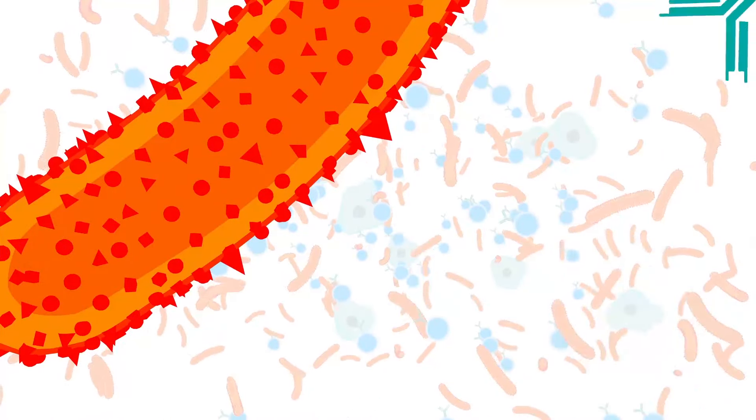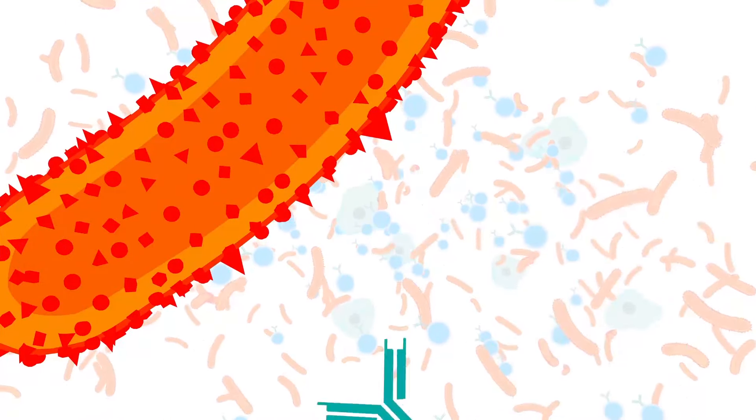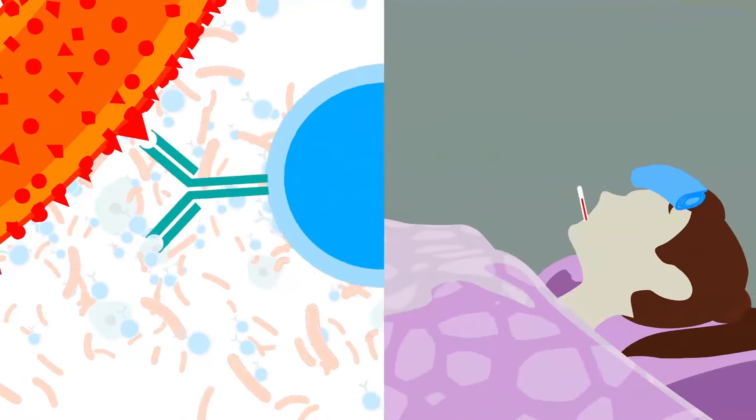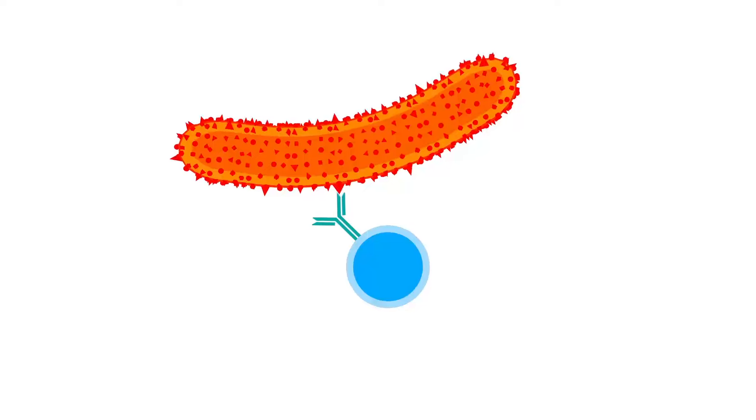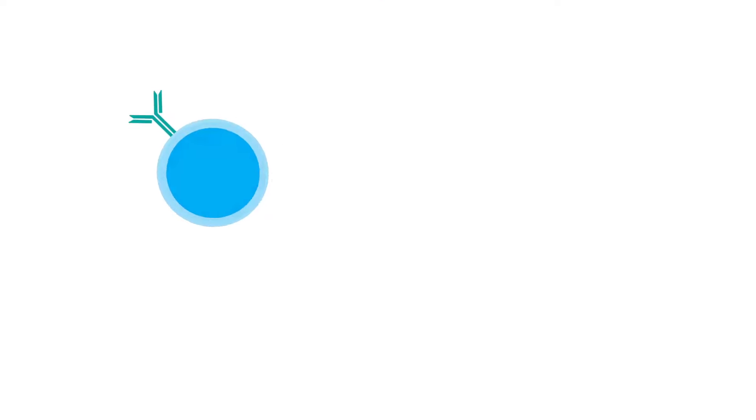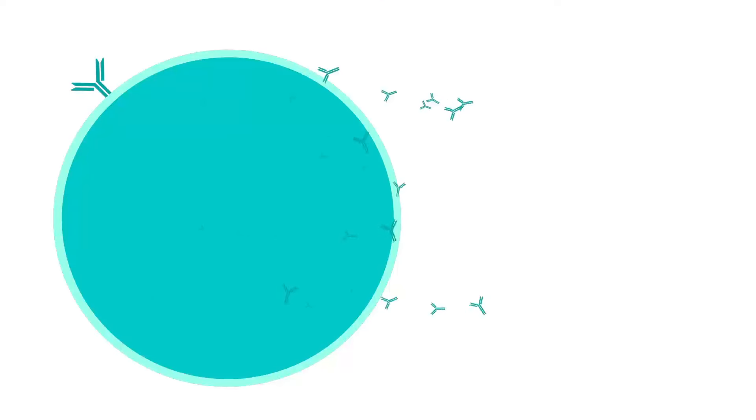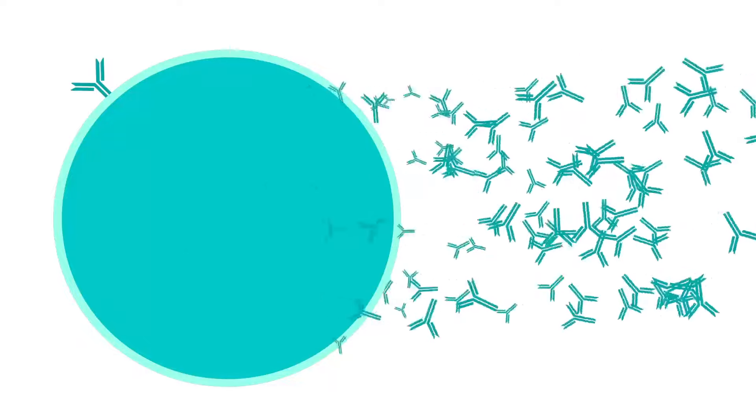Producing antibodies of the right shape can take several days. By this time, there could be billions of disease-causing bacteria in your body. Once the right cells are activated, they quickly divide and turn into a production line, making masses of antibodies that stick to the bacteria.